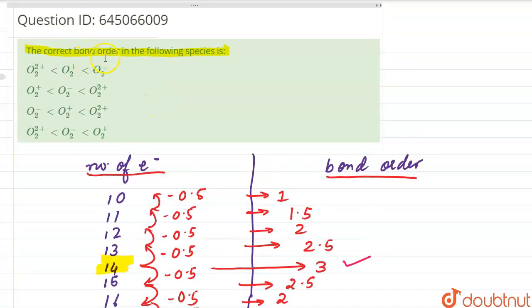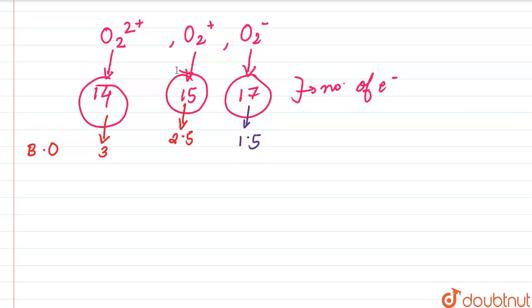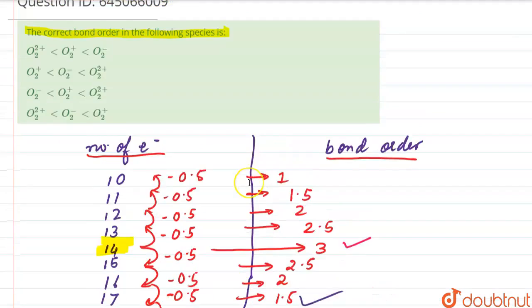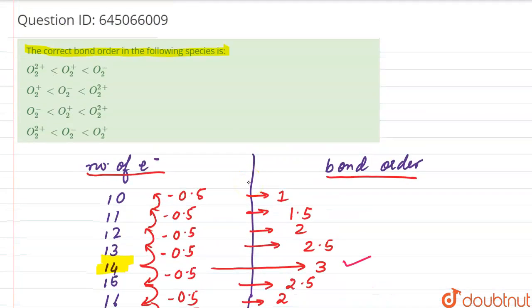So the correct bond order sequence is: O₂²⁺ is maximum with bond order 3, then O₂⁺ with bond order 2.5, then O₂⁻ with bond order 1.5. The correct order is O₂²⁺ > O₂⁺ > O₂⁻. The answer is option number C.